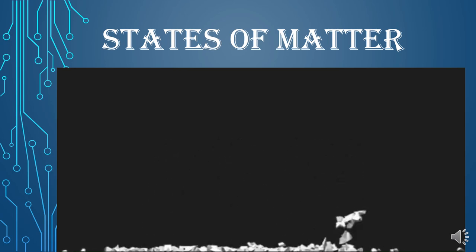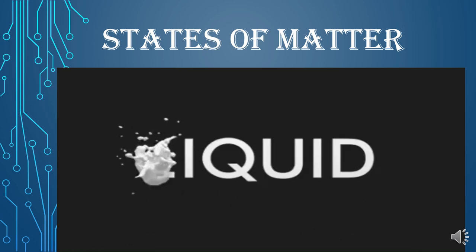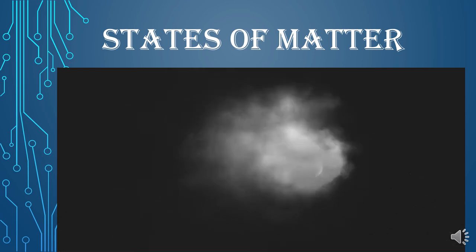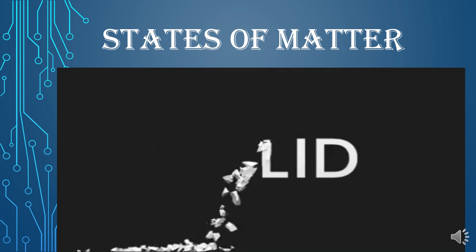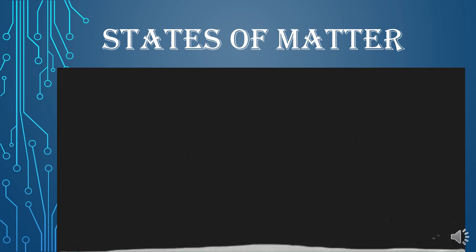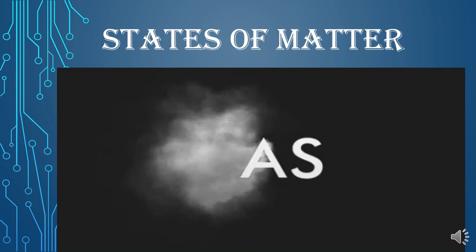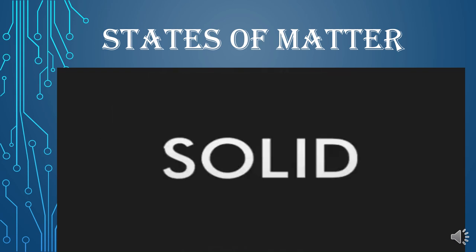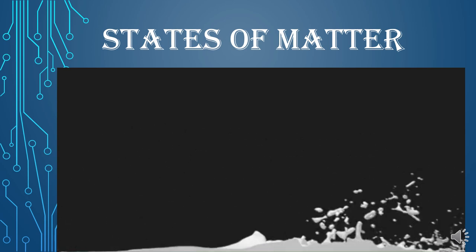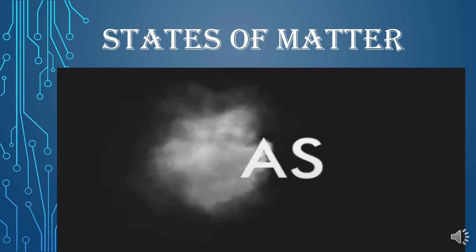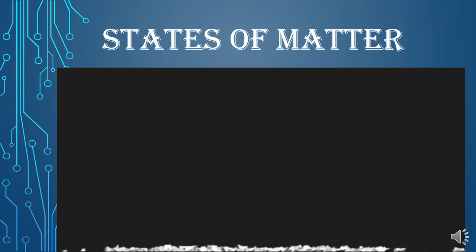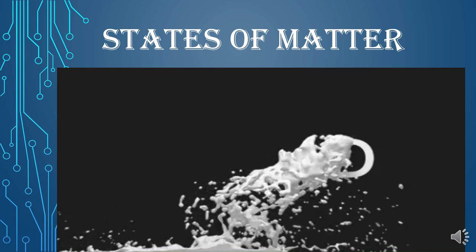Good morning students, hope you all are doing fine. As we have discussed in earlier lectures, matter in our surroundings is made up of particles and these particles have three characteristic properties: inter-particle space, they always keep on moving, and they have a force of attraction between them called inter-particle force of attraction. These three properties are responsible for the variety of states that exist in our surroundings. Let us discuss these states of matter in this topic.